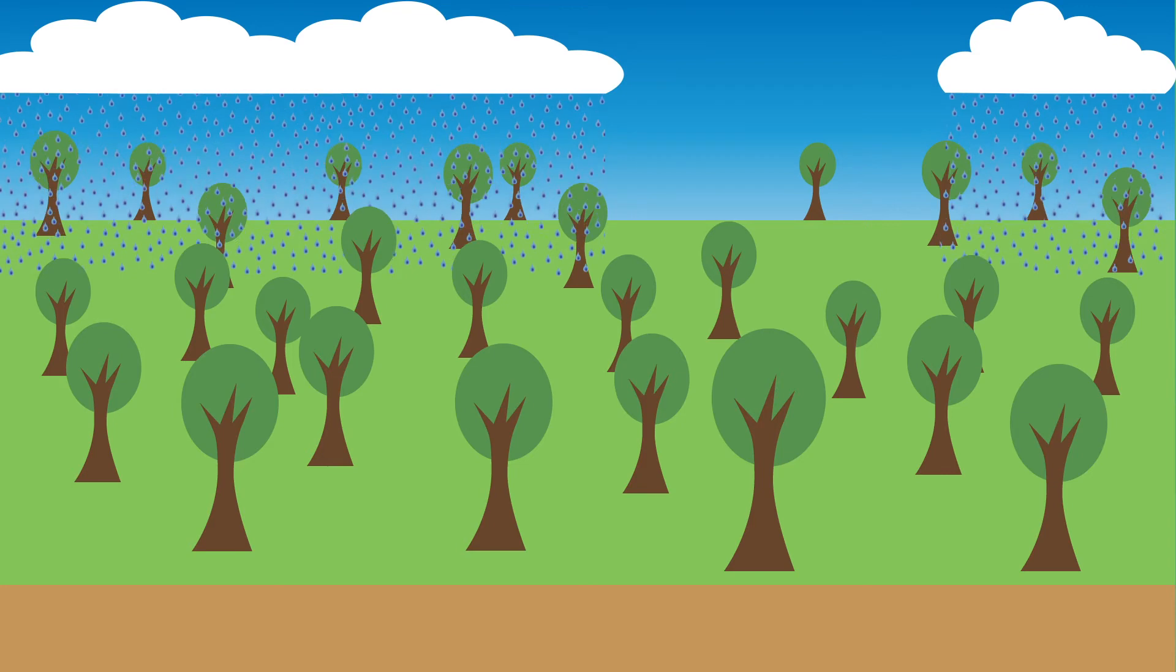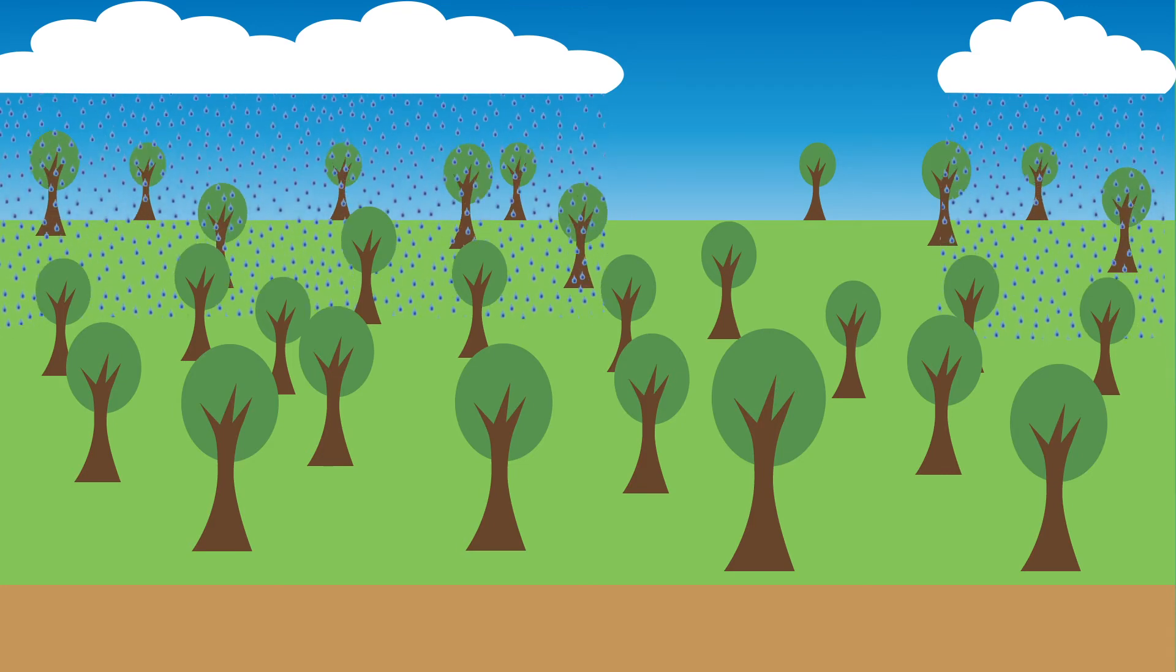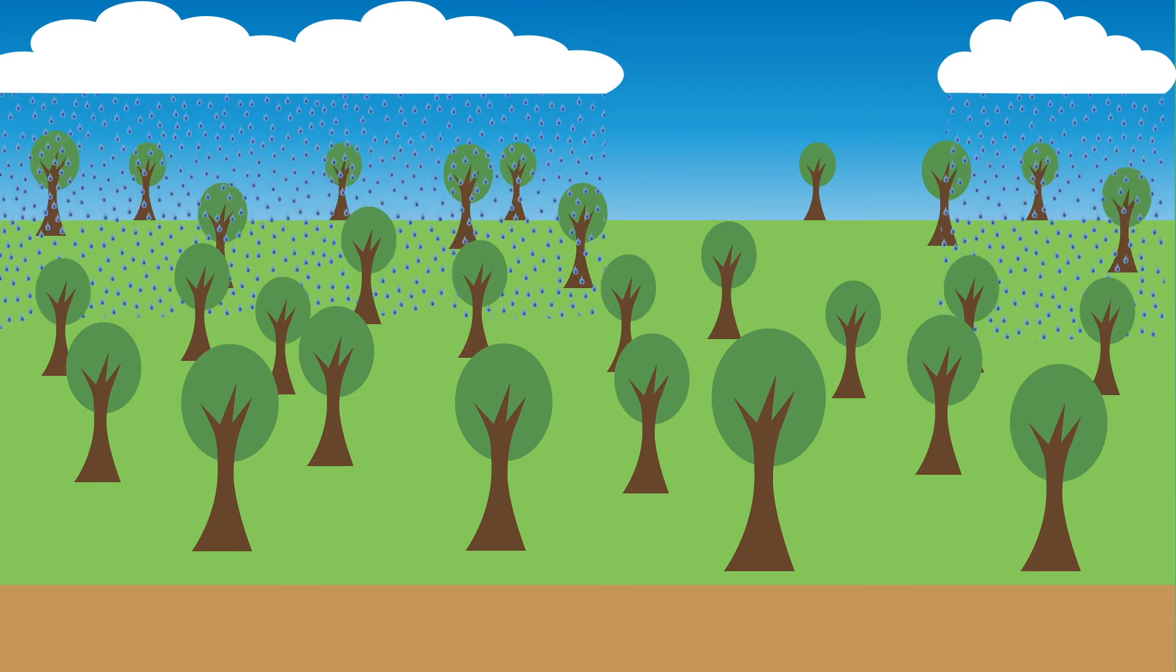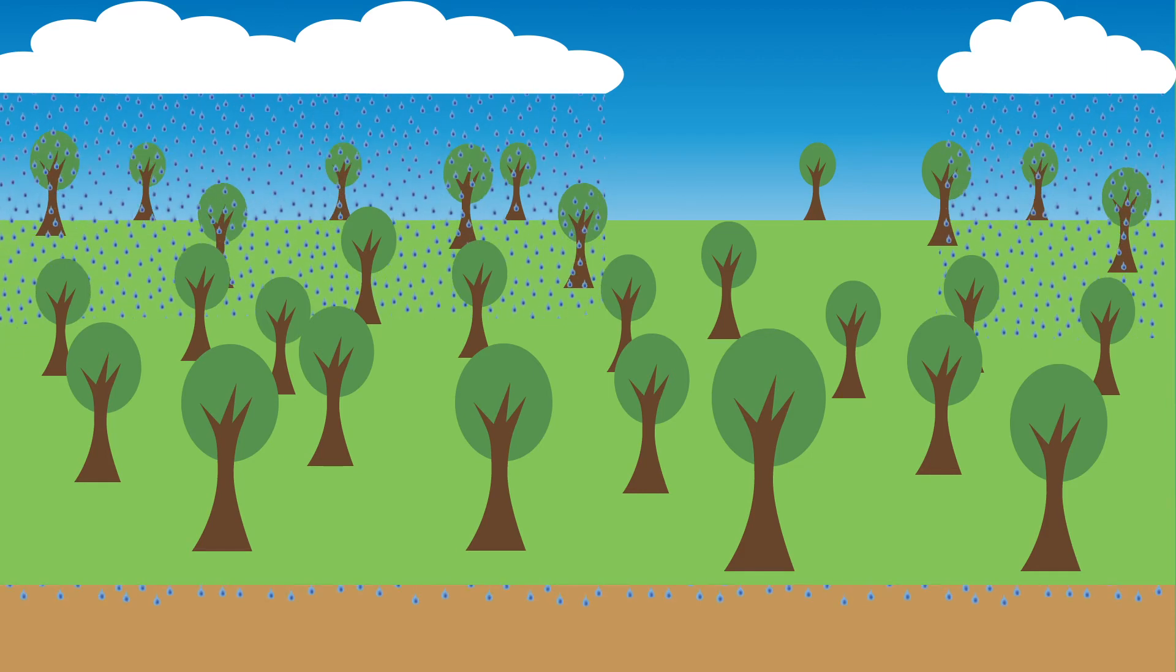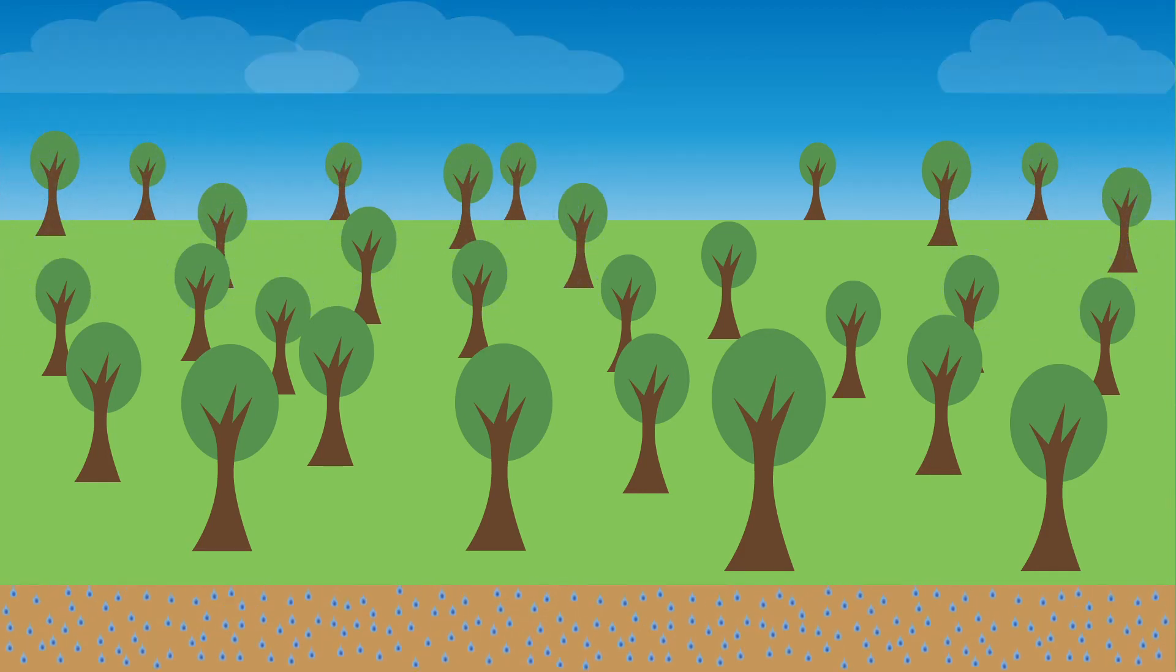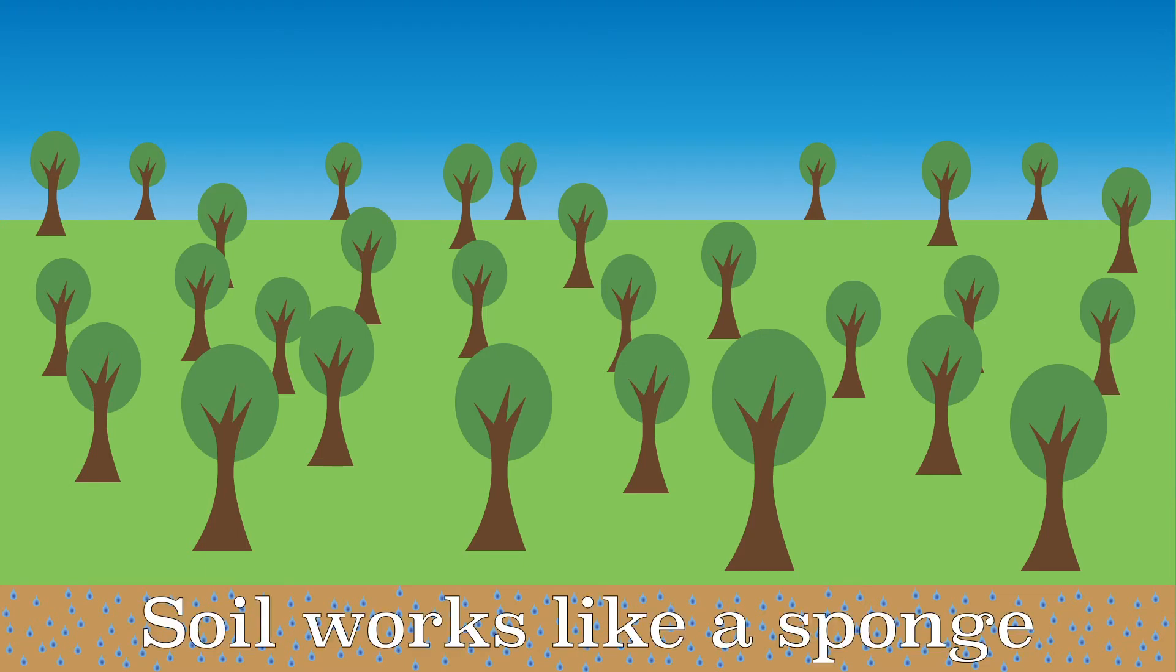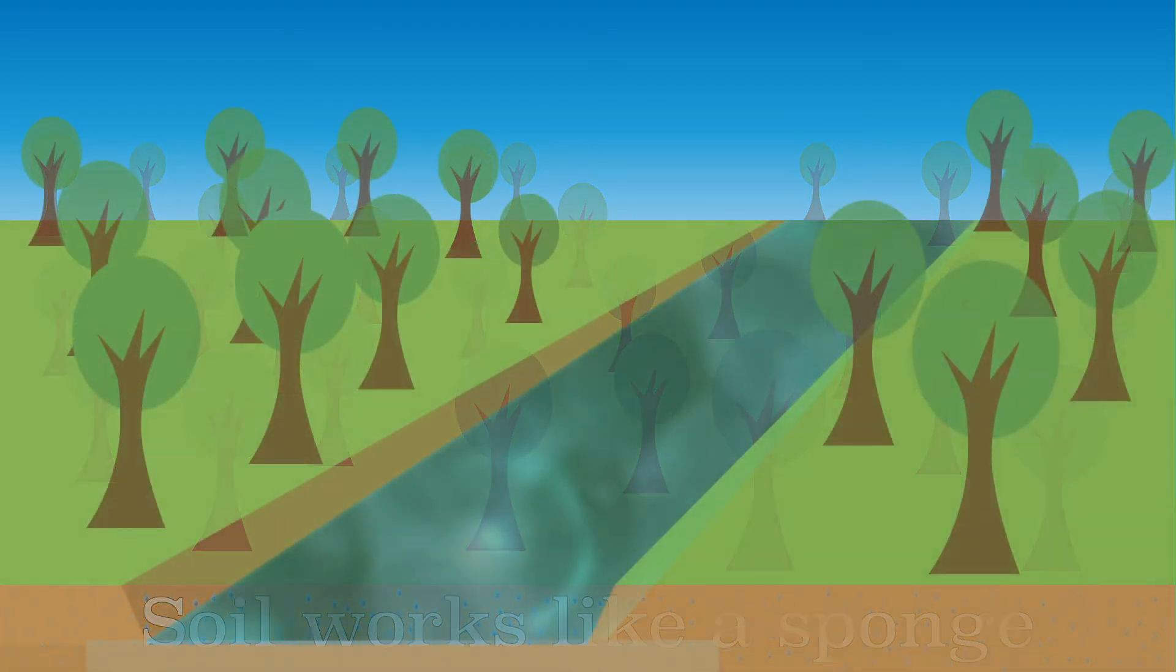Imagine in the drainage basin there is a lot of vegetation and few cities. The water that falls as rainfall is absorbed by the vegetation and is retained by the soil. The landscape holds the water like a sponge, which decreases the chances of flooding.